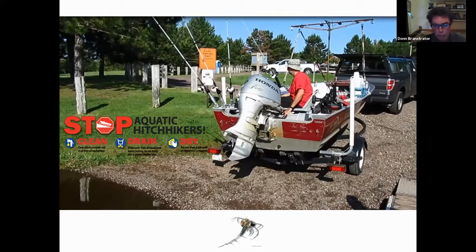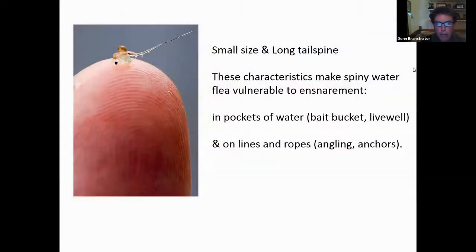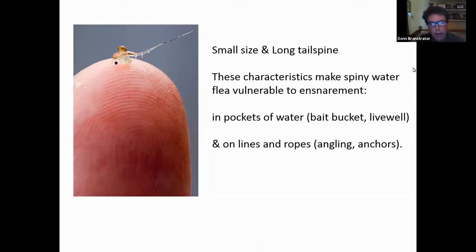Spiny water flea — pictured there at the bottom — is really quite good at hitchhiking or ensnaring on angling equipment. There are a couple of reasons for that. One is its small size — pictured on a fingertip on the left — and it bears this long, stout tail spine. Both of these characteristics make it vulnerable to ensnarement in pockets of water, such as bait buckets and live wells, as well as on lines and ropes like angling and anchor lines.